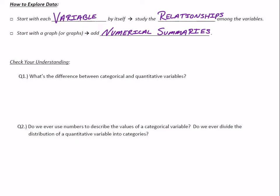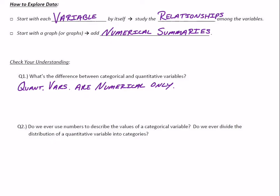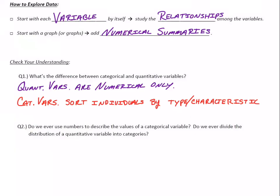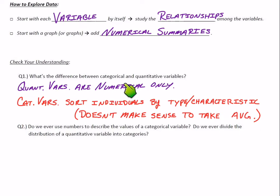Check your understanding, Q1: what's the difference between categorical and quantitative variables? Quantitative variables are numerical — you can take an average and it makes sense. Categorical variables sort individuals by type or characteristic; it doesn't make sense to take an average of those. For example, we don't want to know what the average hair color is — that really doesn't make sense.